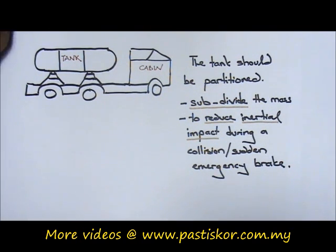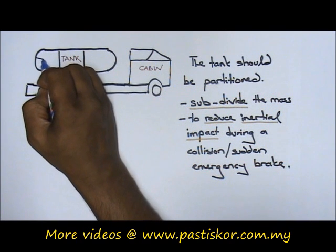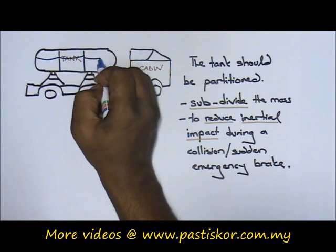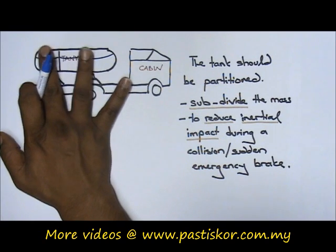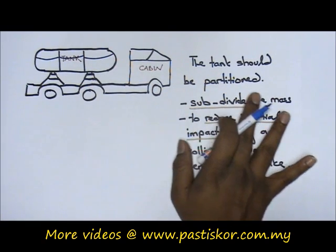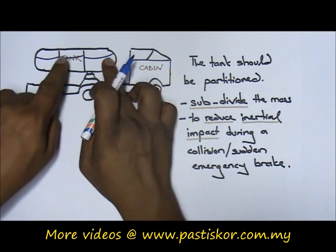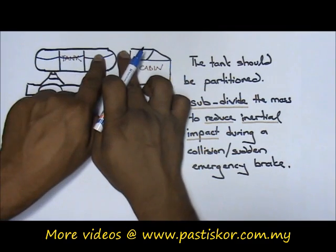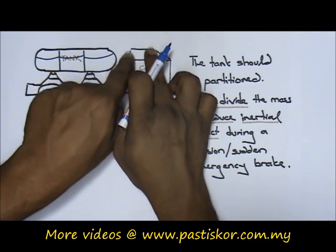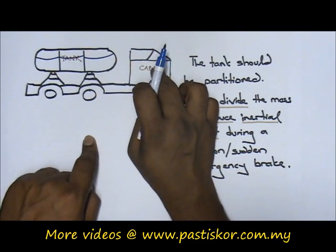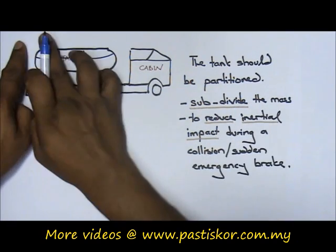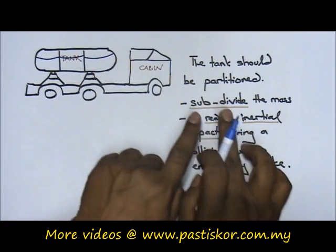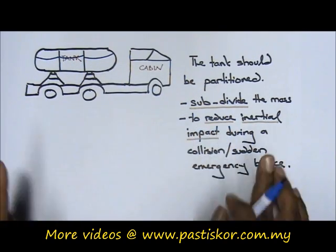Now imagine this tank is filled with water. If you did not partition the tank and it's filled with water, and the lorry is moving very fast and meets an accident or applies the brake, the entire mass of the water will just push the tank. When it pushes the tank, the tank will go into the cabin and the driver inside will die. So what we do is partition the tank. When we partition the tank, we technically subdivide the mass, making it into smaller portions. When we do that, we actually reduce the inertial impact.